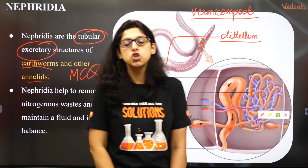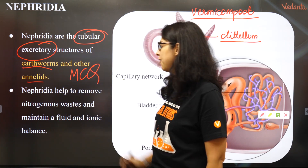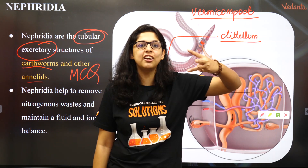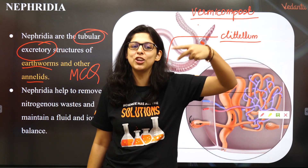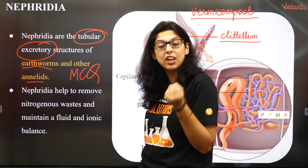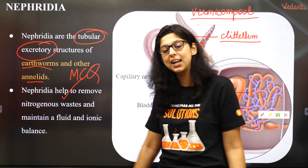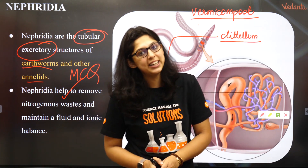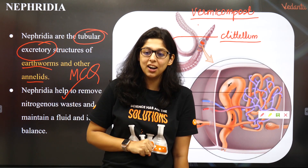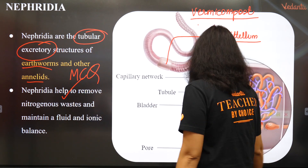In annelida, this tubular structure is called nephridia. Nephridia help excrete nitrogenous waste, which has three categories: ammonia, urea, and uric acid, formed via deammonification. By excreting these solutes, nephridia help maintain both ionic and fluid balance in the body.